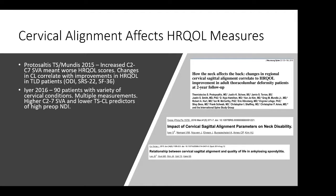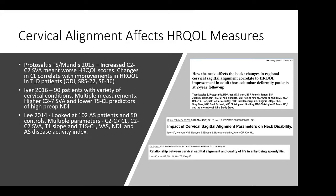In 2016, Ira et al. looked at 90 patients with a variety of cervical conditions and found that higher SVA and lower cervical lordosis were predictors of high preoperative neck disability index. In 2014, Lee looked at adult scoliosis patients and 50 controls with multiple measurements and found that poor sagittal alignment in the cervical spine was associated with worse outcomes. C2-7 SVA was seen as a significant predictor of VAS, NDI, and neck pain and disability scores.